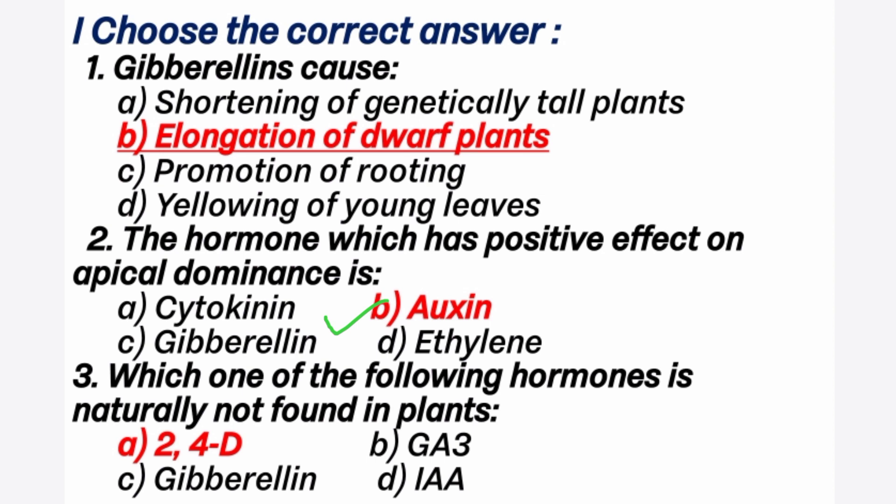Auxin hormone is the first plant hormone. 3rd question: which one of the following hormones is naturally not found in plants? Answer is A option: 2,4-D. 2,4-D means 2,4-dichlorophenoxyacetic acid. It is a synthetic auxin. IAA is a natural auxin.